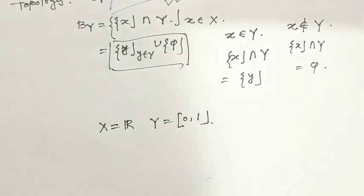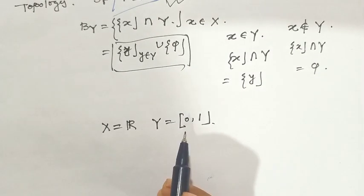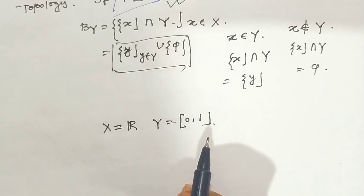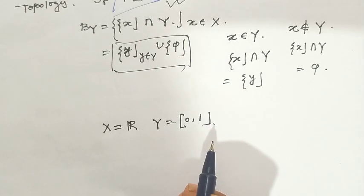Next example: X equals R and Y equals the closed interval [0, 1].